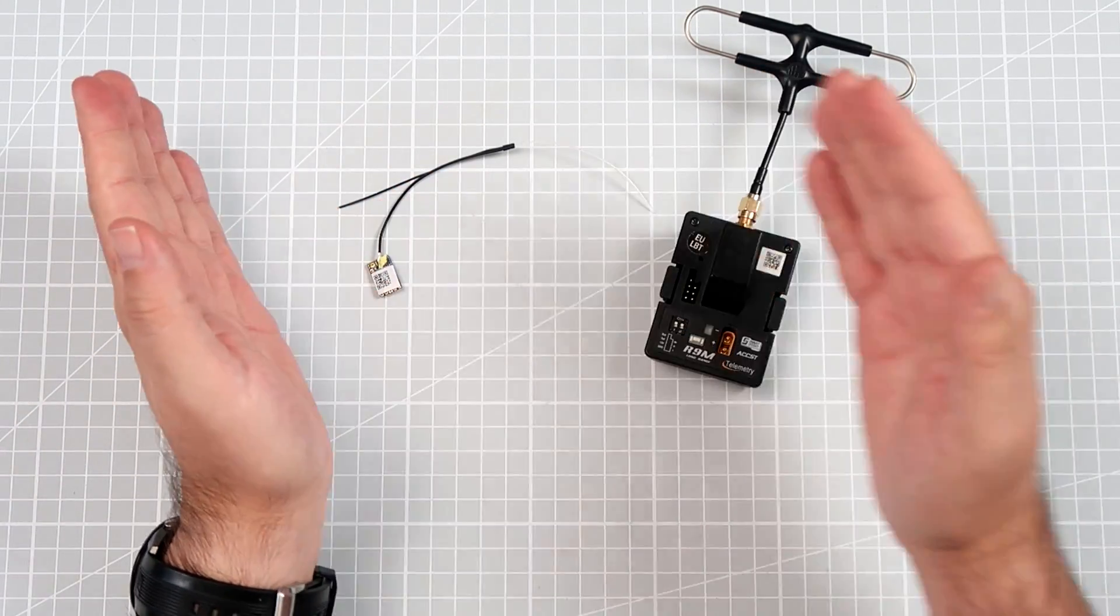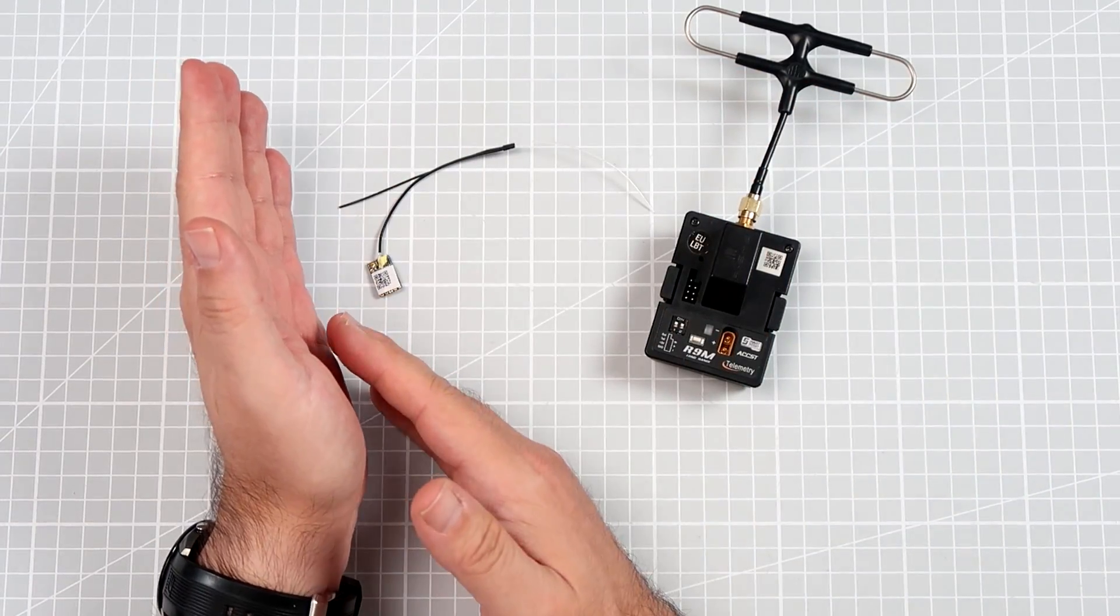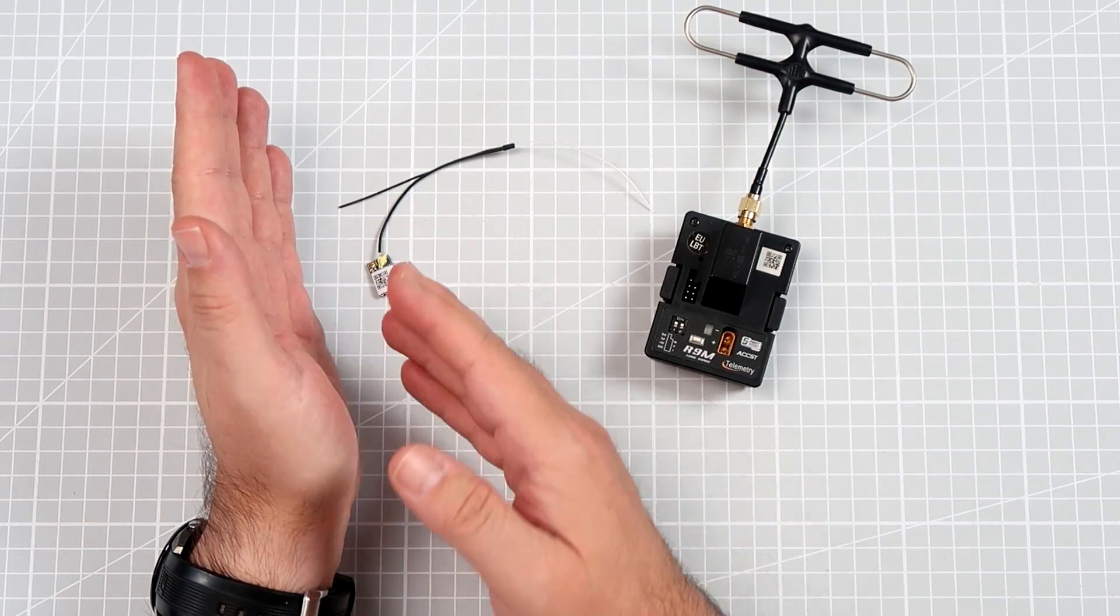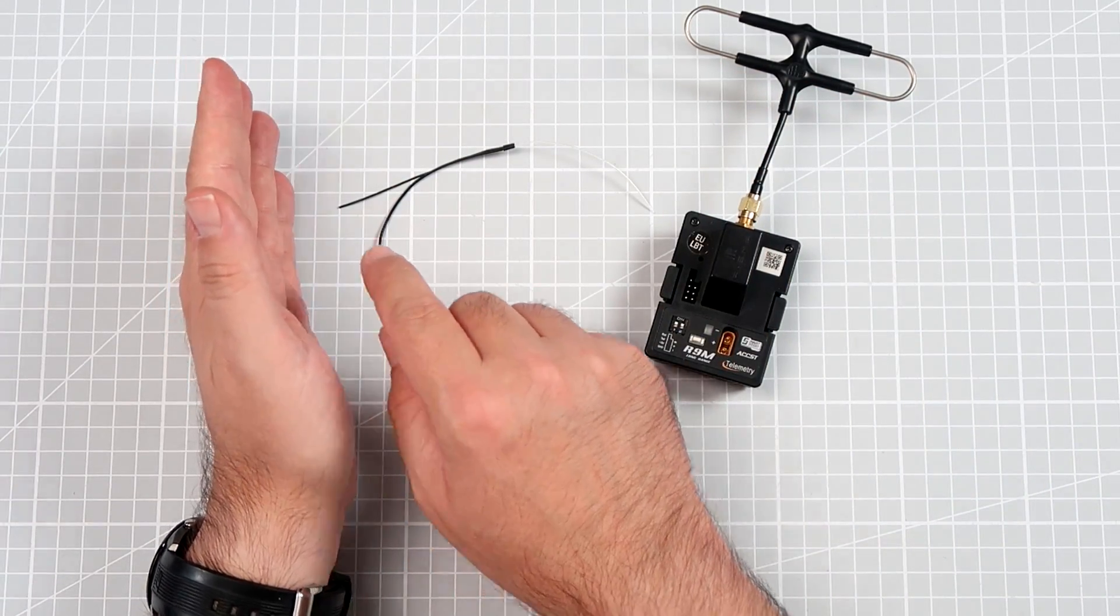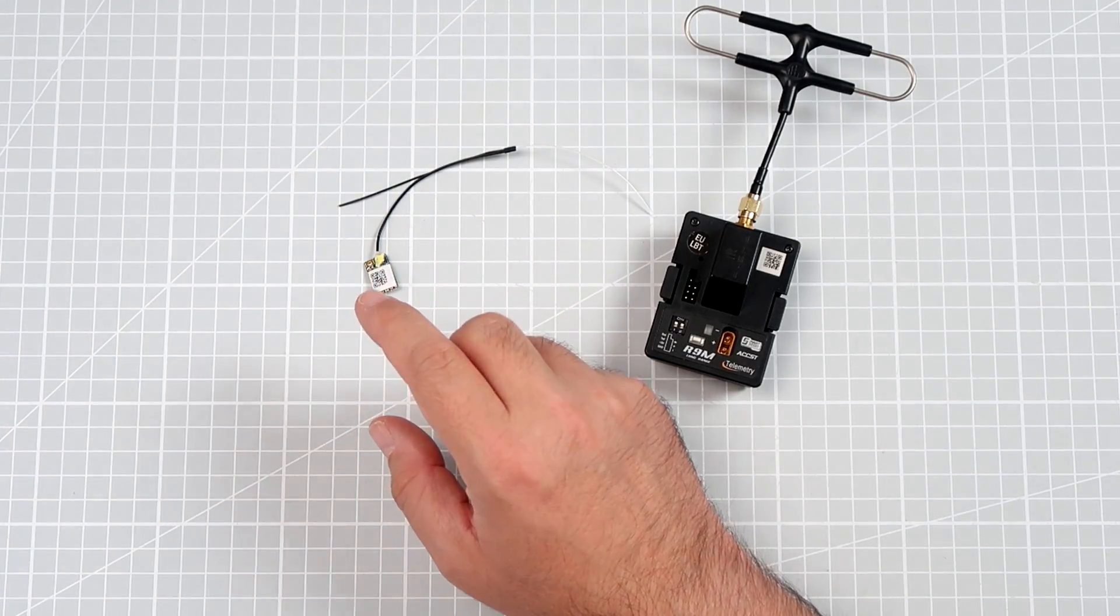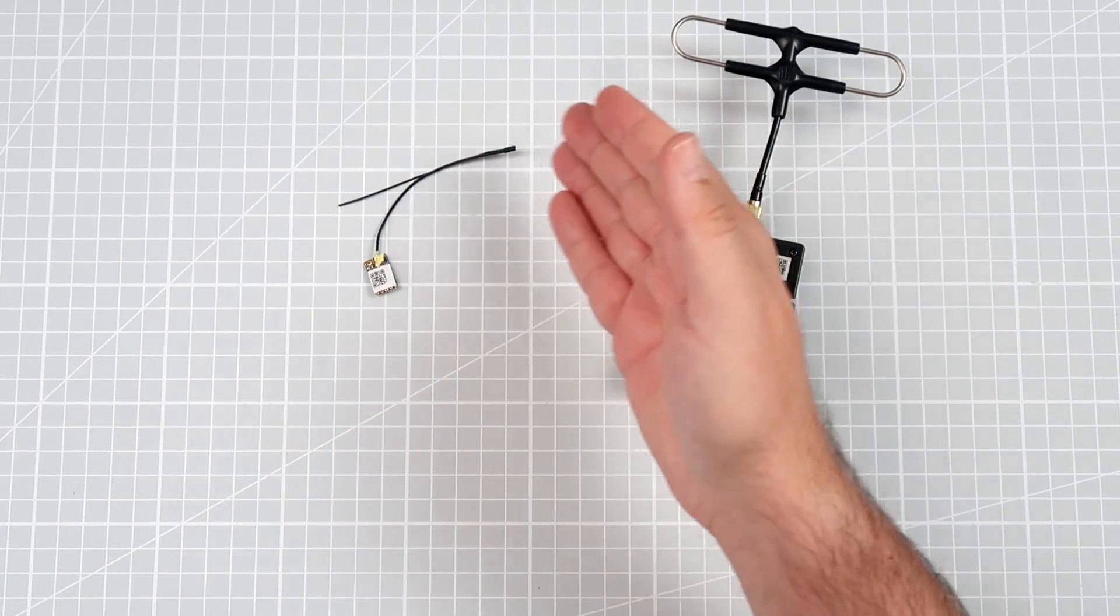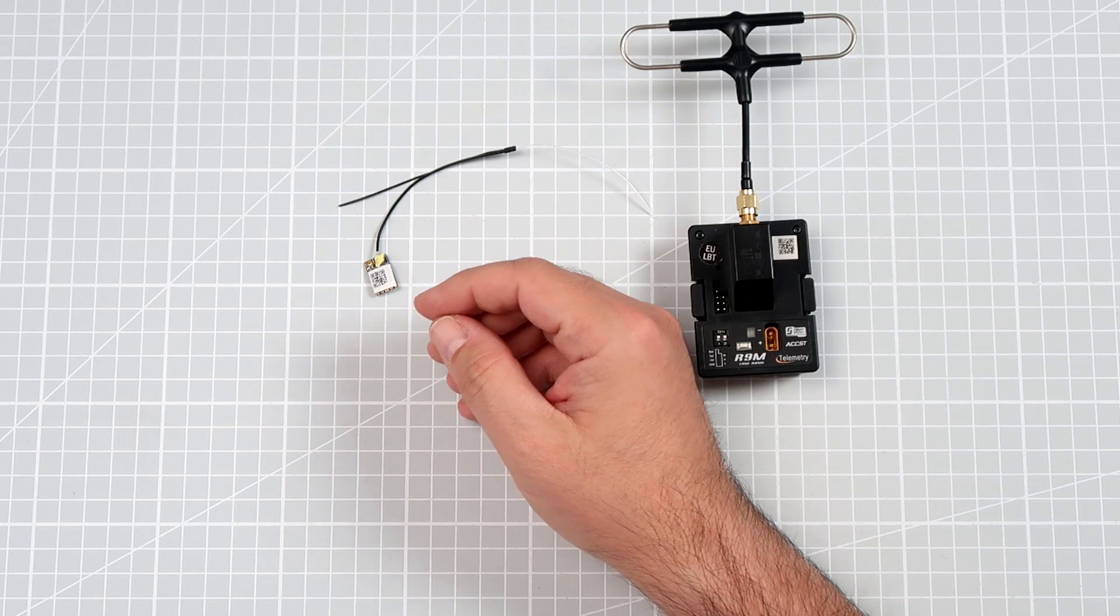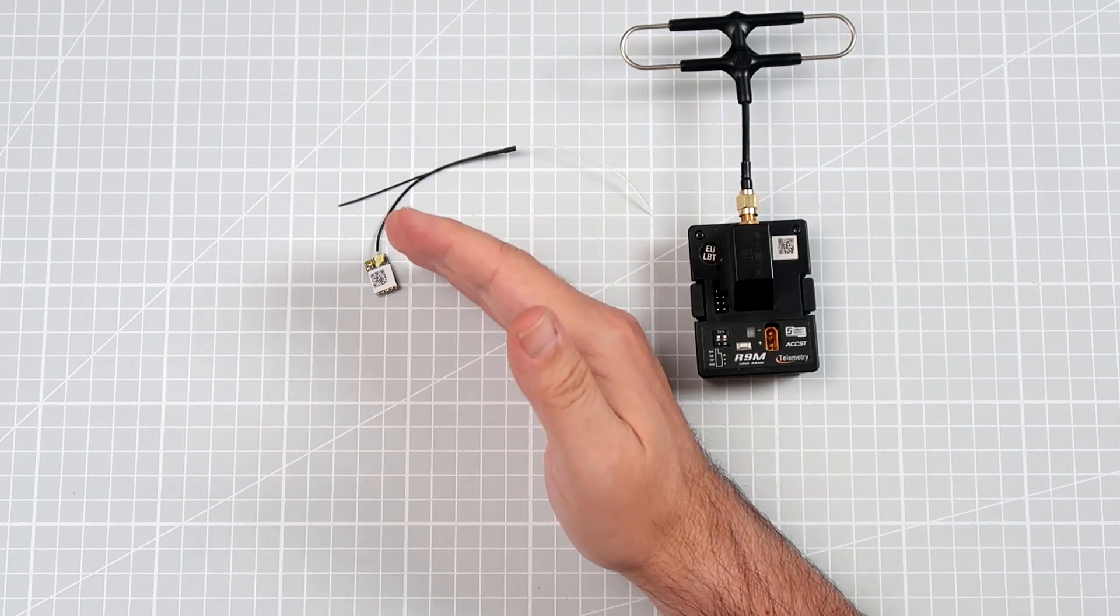If, for example, you have a few models and only one model is having problems with telemetry loss, that means that probably the receiver in this model or the antenna, but this thing you can actually visually inspect, is damaged. Check with a different one.